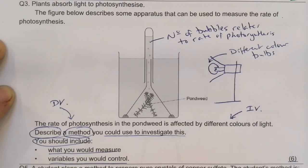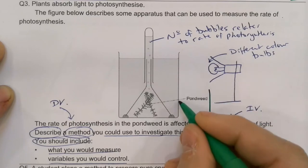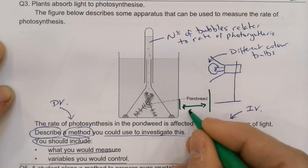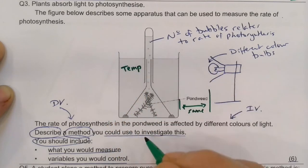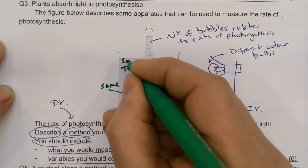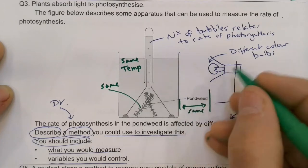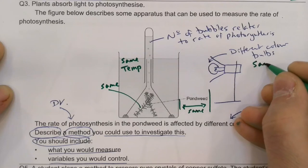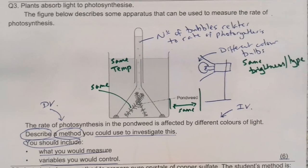What things do I need to keep the same to make sure this is fair? Well, I need to make sure that the brightness is the same. I need to make sure the distance is the same. Same temp. I need to make sure the type of weed must be the same. OK, so pondweed. I normally only need to find about three things to control. That's fine. I also need different color bulbs. The bulbs need to be the same brightness and type. OK, they just need to be different color. That's the only thing.